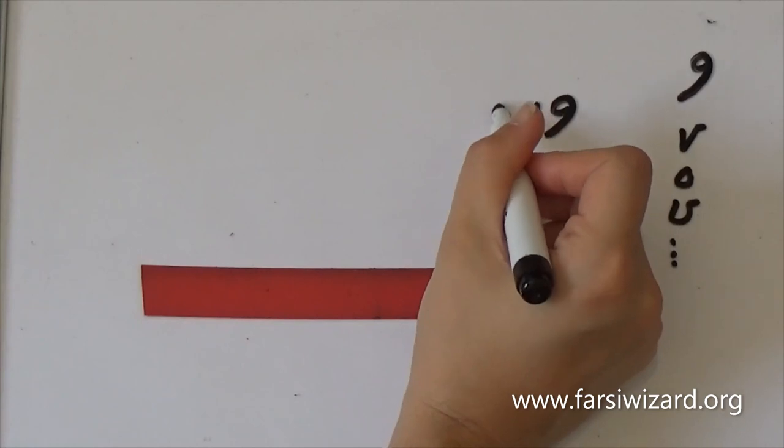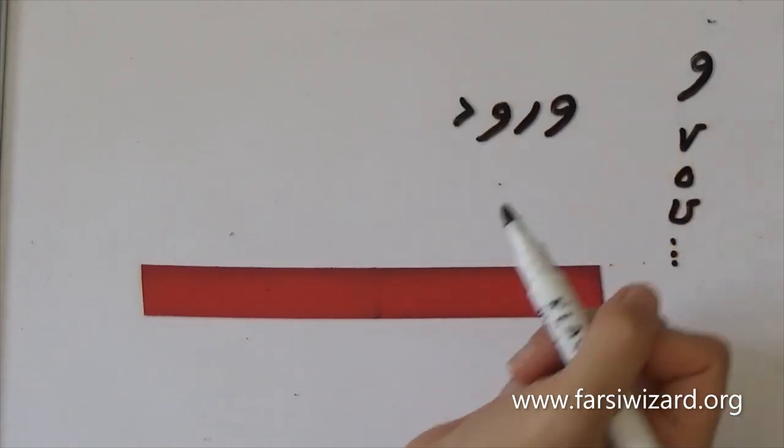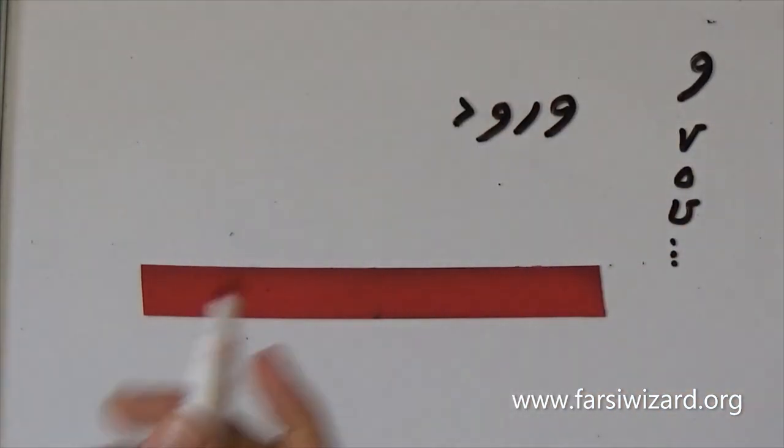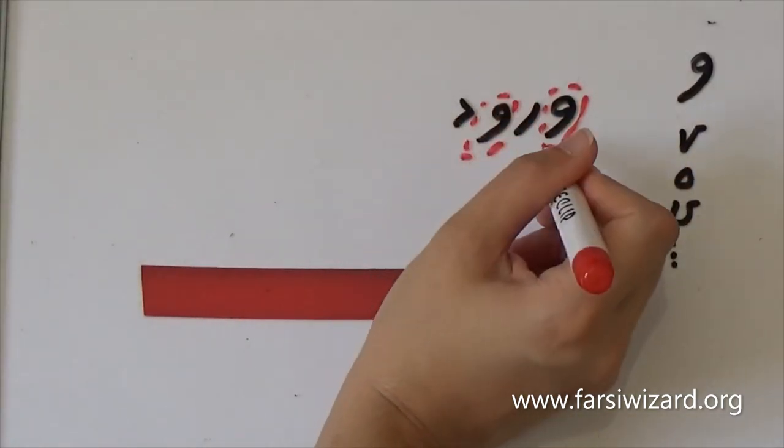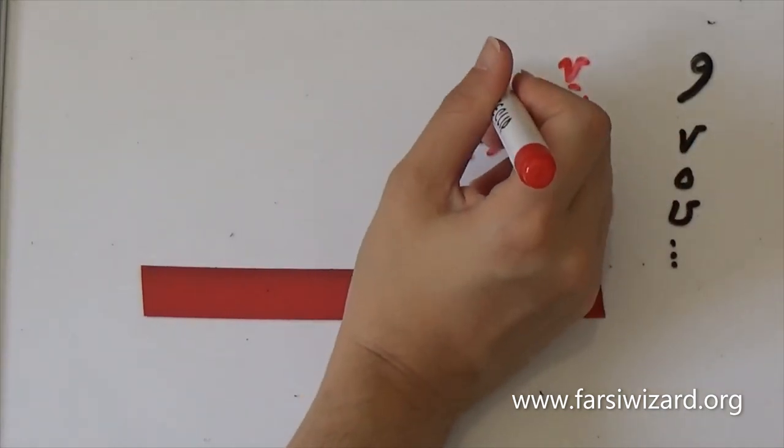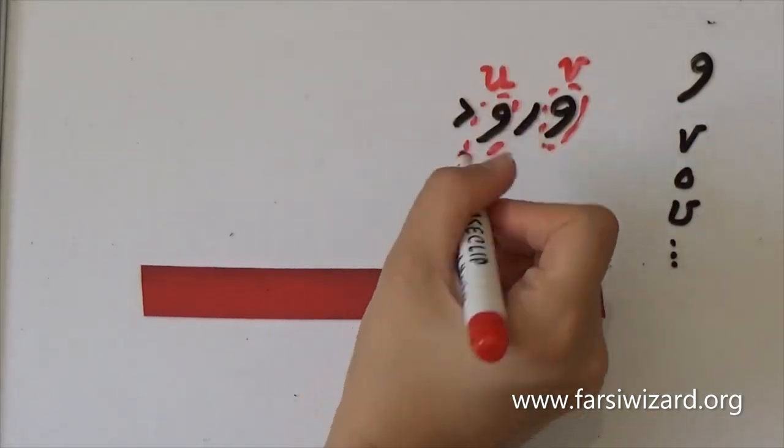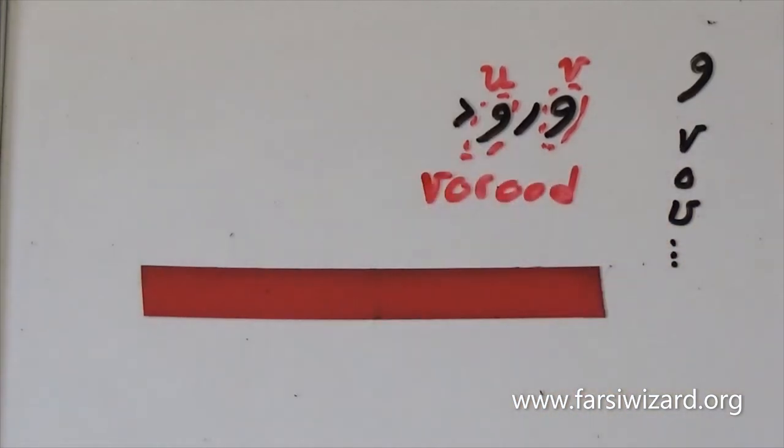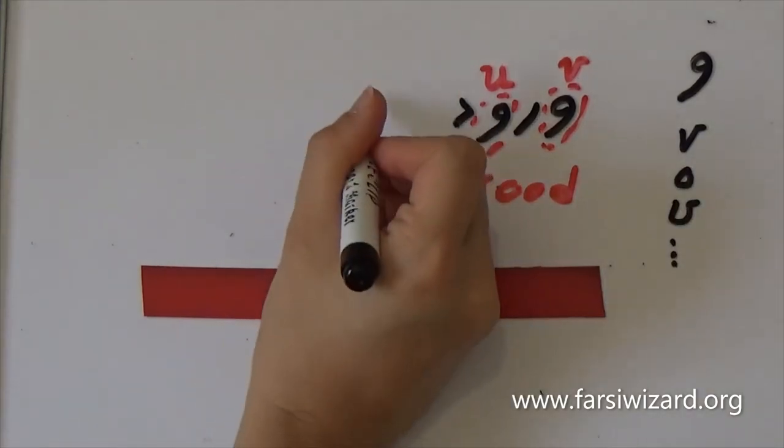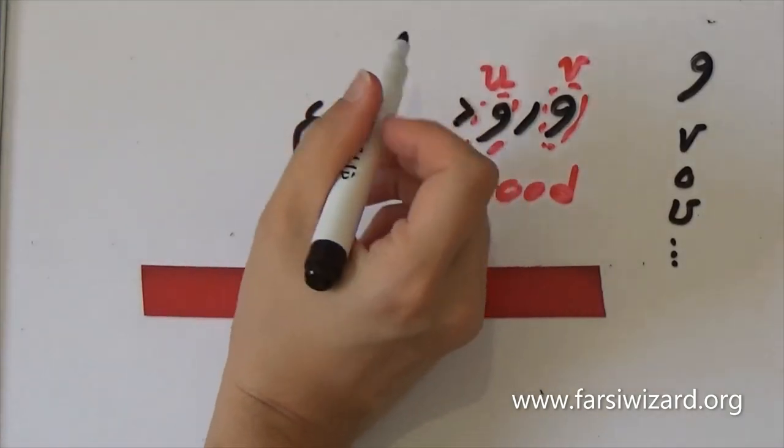The first example here we have vorud. As you can see vav appears here twice but in the first case is the equivalent of V and in the second case is the equivalent of U. The sound is U. So vorud. Vorud means entrance so if you see this sign above the door this means that's the entrance. It's a very interesting case because you can see both versions of vav in one word, both sounds basically.